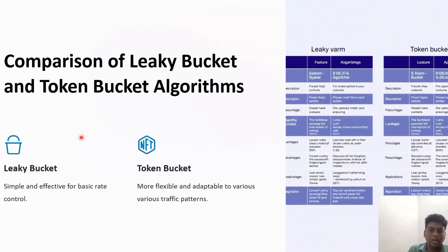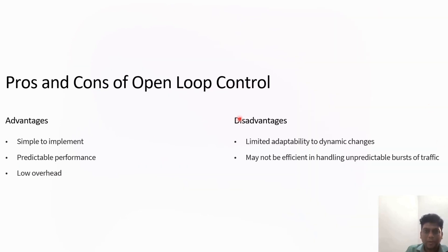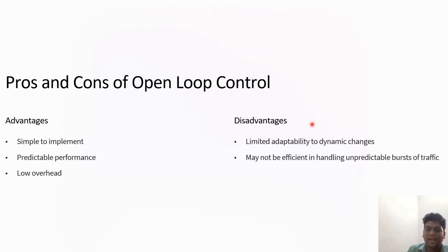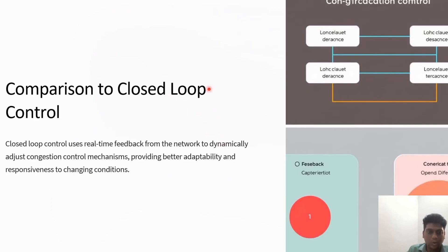Comparing leaky bucket and token bucket: the leaky bucket is simple and effective for basic rate control, while the token bucket is adaptable to various traffic patterns. The main pros and cons of open loop control are that implementation is simple, performance is predictable, and it is a low overhead method. However, it has limited adaptability to dynamic changes and cannot efficiently handle unpredictable bursts in network traffic.